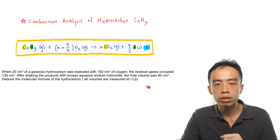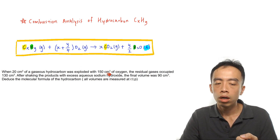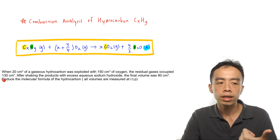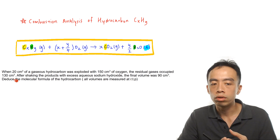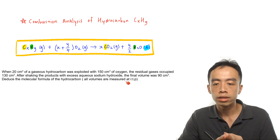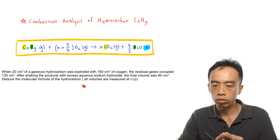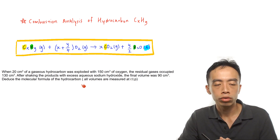The question: when 20 cm³ of a gaseous hydrocarbon is exploded with 150 cm³ of oxygen, the residual gases occupied 130 cm³. After shaking the products with excess aqueous sodium hydroxide, the final volume was 90 cm³. We want to deduce the molecular formula for this hydrocarbon. Everything is measured at room temperature and pressure.